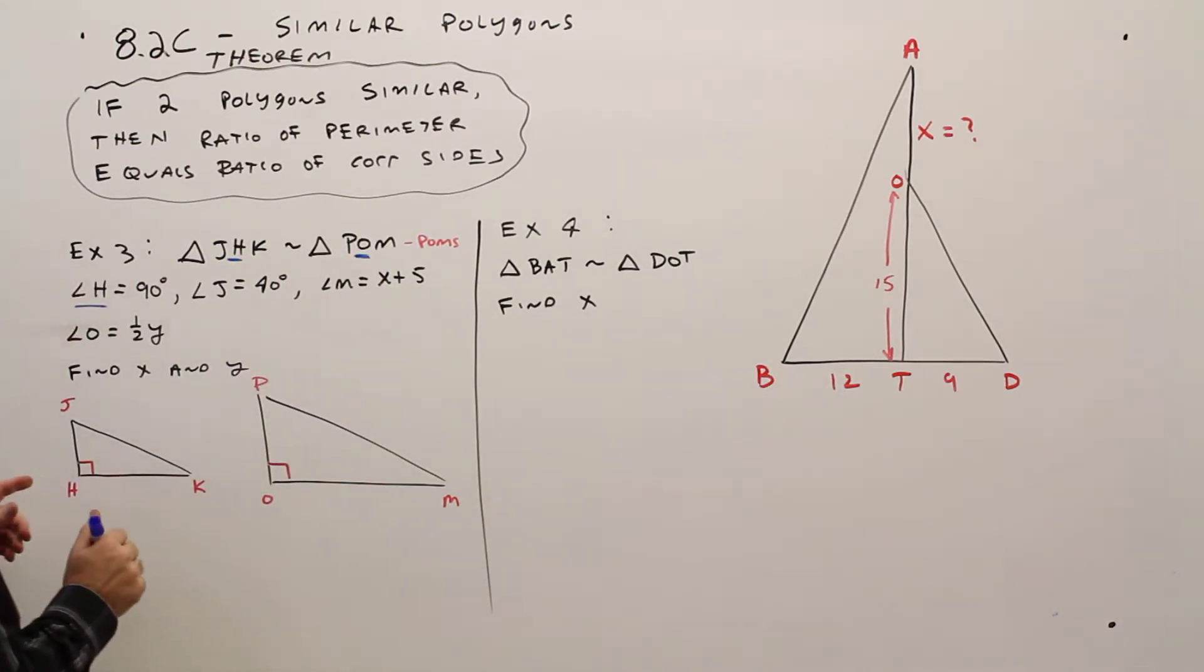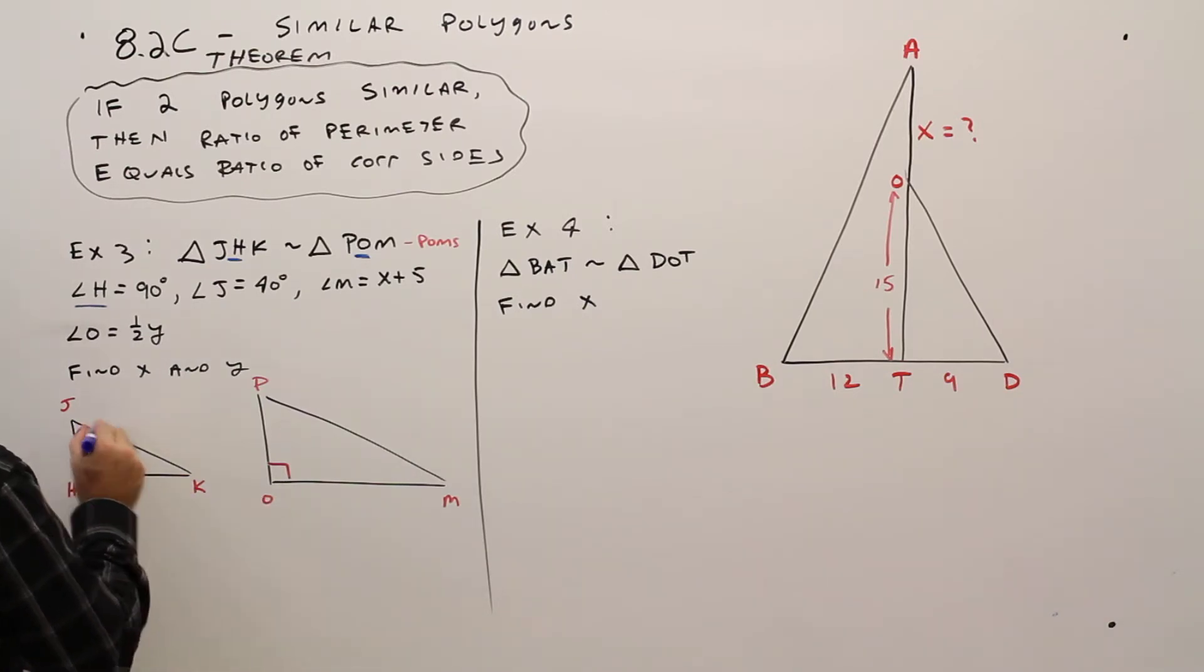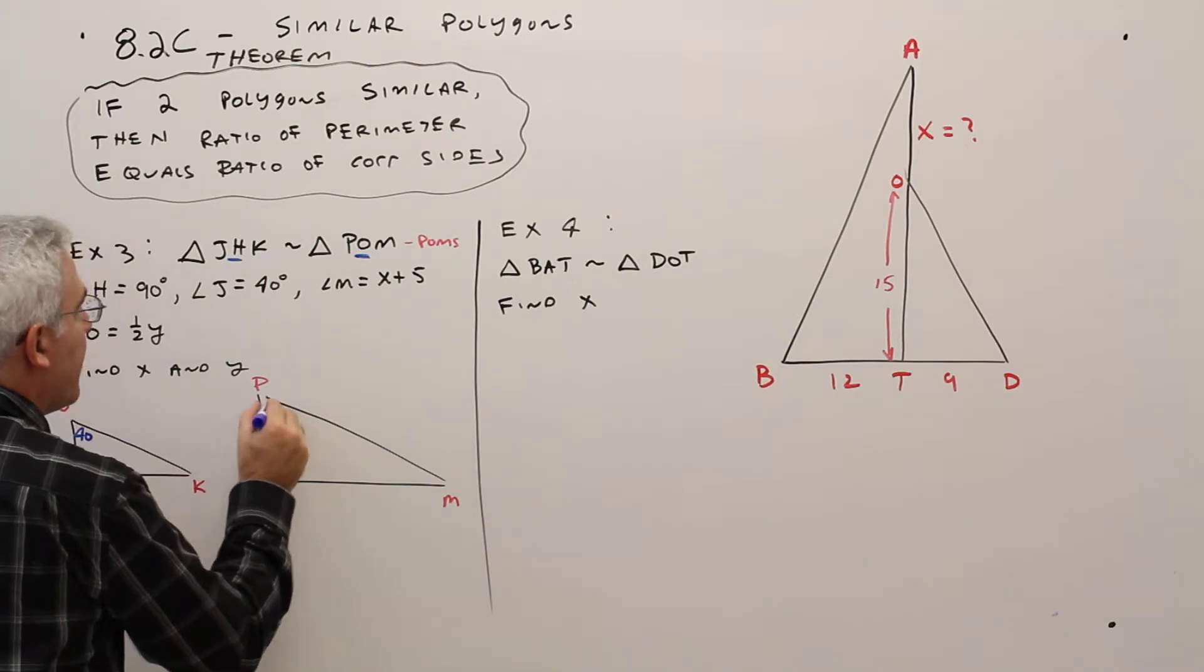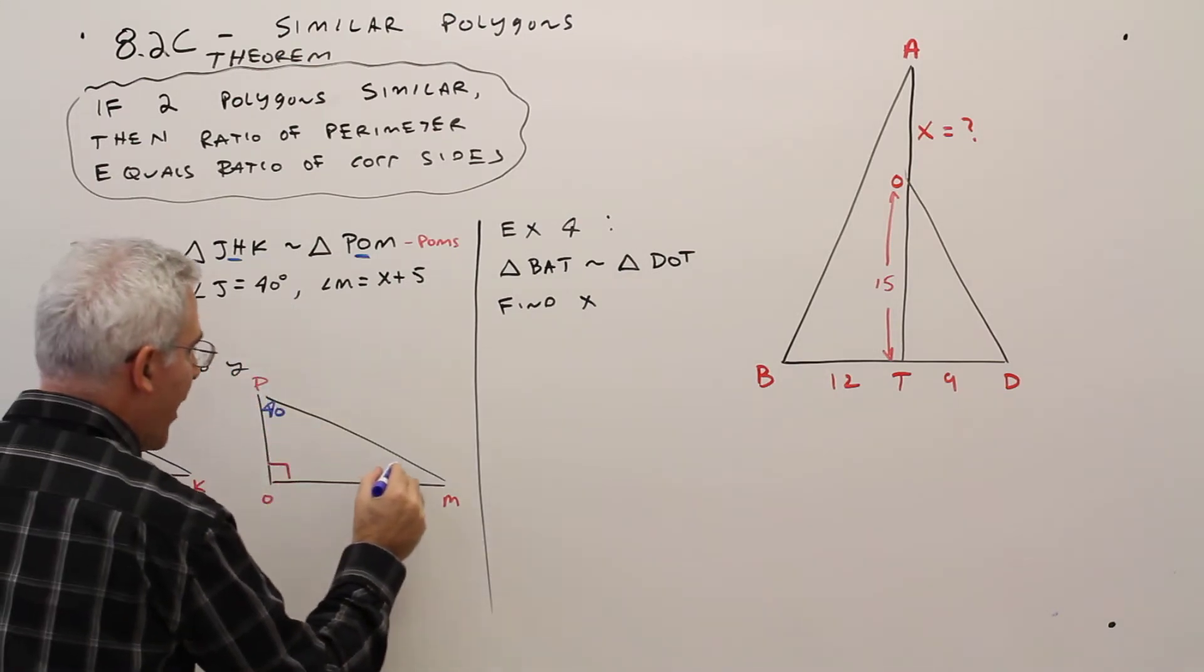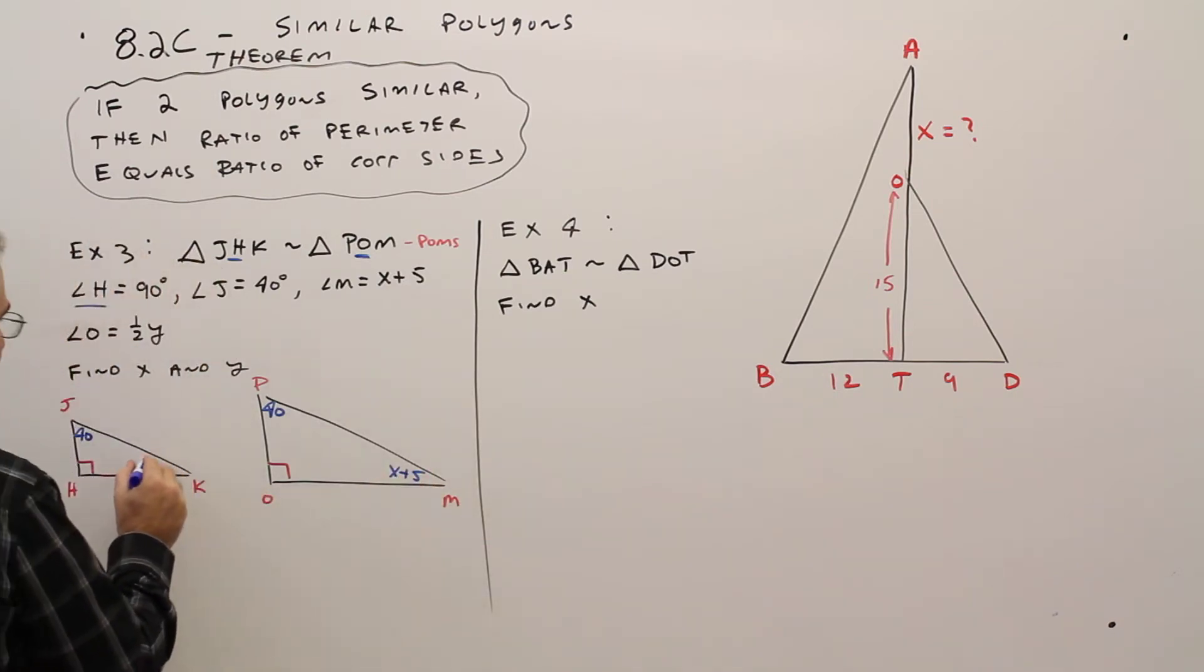So I'm going to write in what I've got. So 90 and 90. J is 40. If J is 40, then P is 40. M is X plus 5, which means this is also X plus 5. O is one half Y.